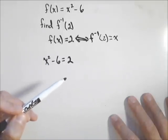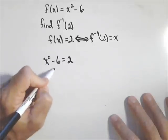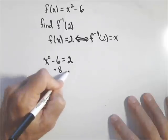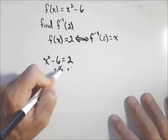But in this case, I'm going to add six to both sides, and I get x squared equals eight.